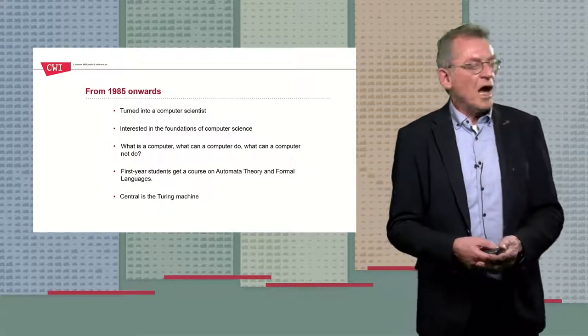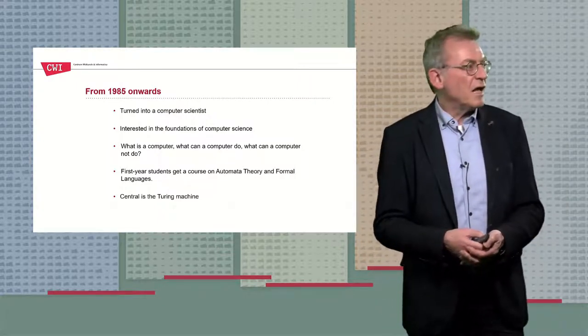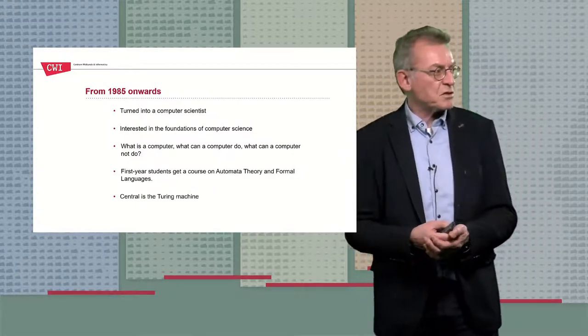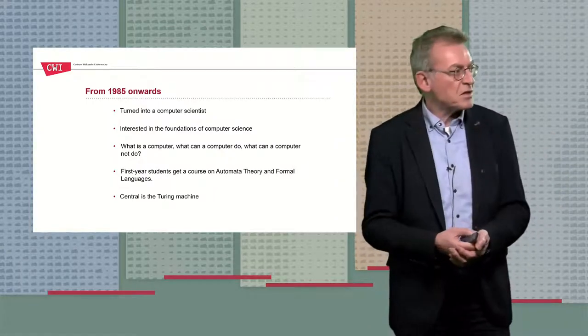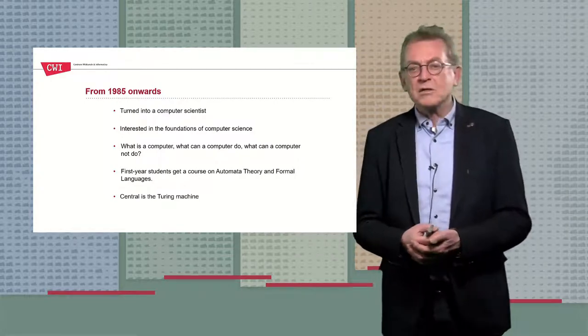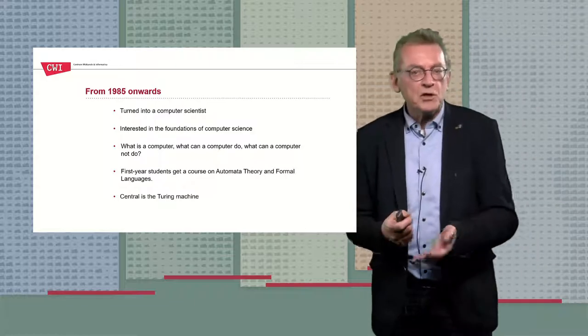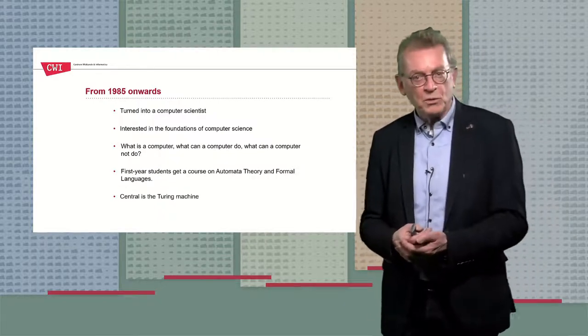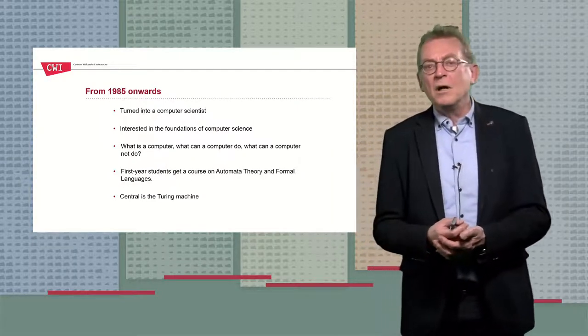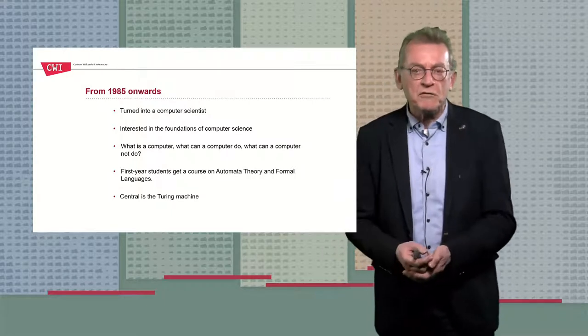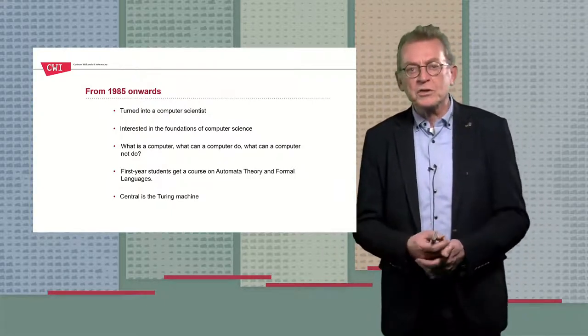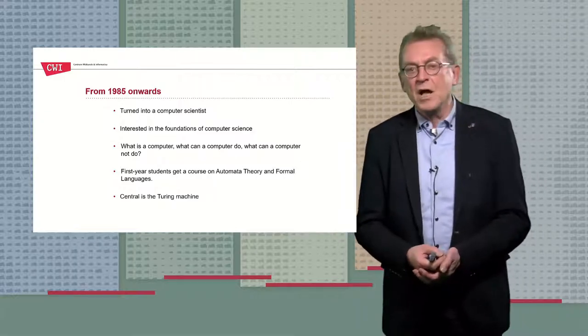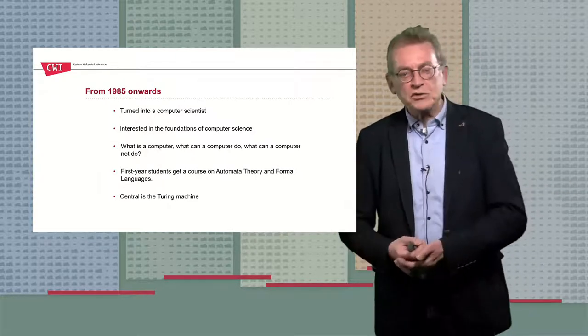So as of 84, I slowly turned into a computer scientist. In the course of the years after, I got very much interested in the foundations of computer science. So what are the foundations of computer science? I concerned myself with questions like, what is a computer? What makes something a computer? What can a computer do? And what can a computer not do? Are there limits to what a computer can do? These foundational questions of computer science we teach to all our first-year students in programs on computer science, usually called a course on automata theory in formal languages.